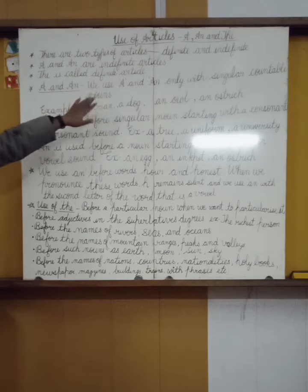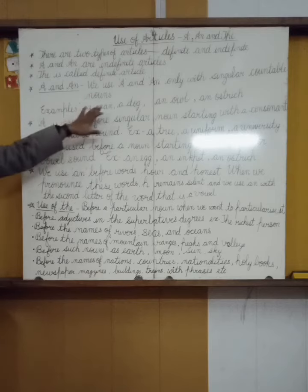We use A and An only with singular countable nouns. Examples: a man, a dog, an owl, an ostrich.